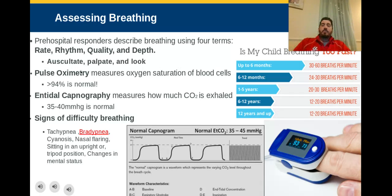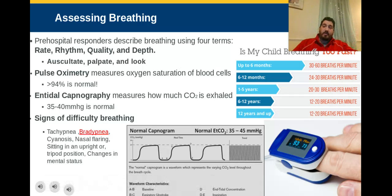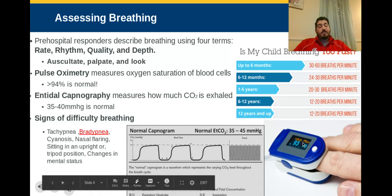Pulse oximetry measures the oxygen saturation of the blood cells flowing around your body. Greater than 94% is normal — most people run 96 to 100%. As we get lower than 94%, we start to get more concerned, especially as we get into the 80s, 70s, and lower. It's that little device we put on the finger that reads the color of red blood cells to determine oxygen levels; it usually gives us a pulse reading too.